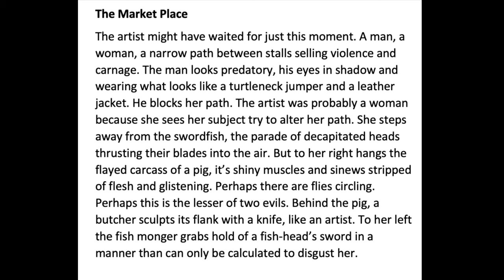The artist might have waited for just this moment. A man, a woman, a narrow path between stalls selling violence and carnage. The man looks predatory, his eyes in shadow and wearing what looks like a turtleneck jumper and a leather jacket. He blocks her path. The artist was probably a woman because she sees her subject try to alter her path. She steps away from the swordfish, the parade of decapitated heads thrusting their blades into the air. But to her right hangs the flayed carcass of a pig, its shiny muscles and sinews stripped of flesh and glistening. Perhaps there are flies circling. Perhaps this is the lesser of two evils. Behind the pig, a butcher sculpts its flank with a knife like an artist. To her left, the fishmonger grabs hold of a fish-head sword in a manner that can only be calculated to disgust her.